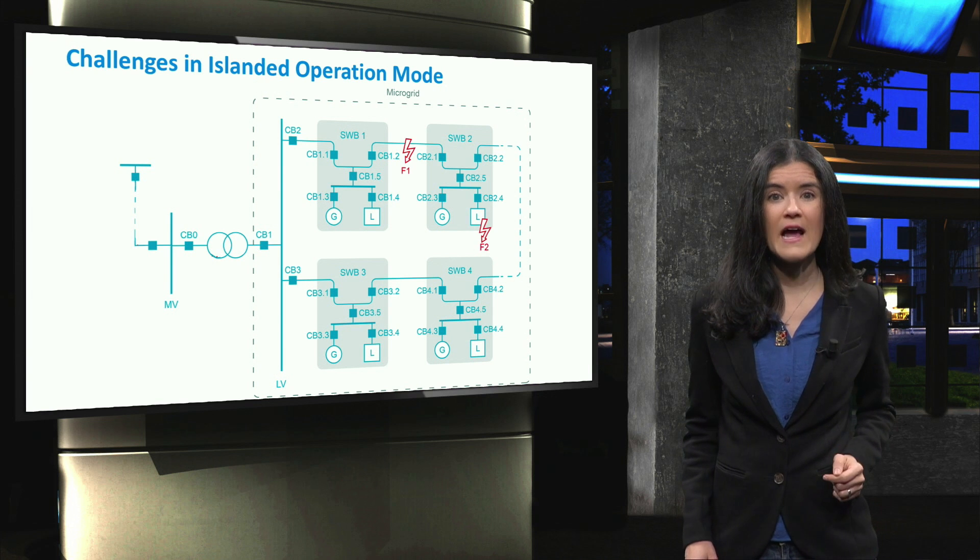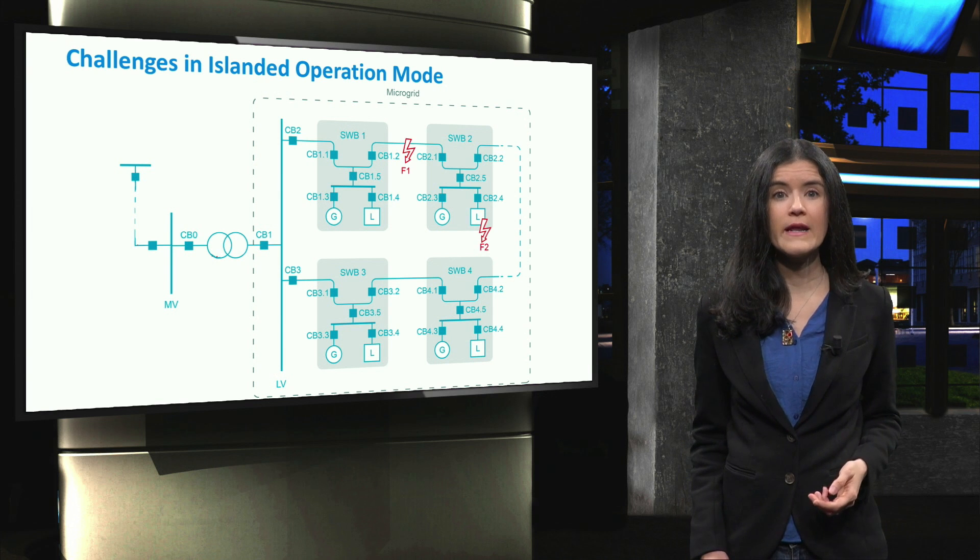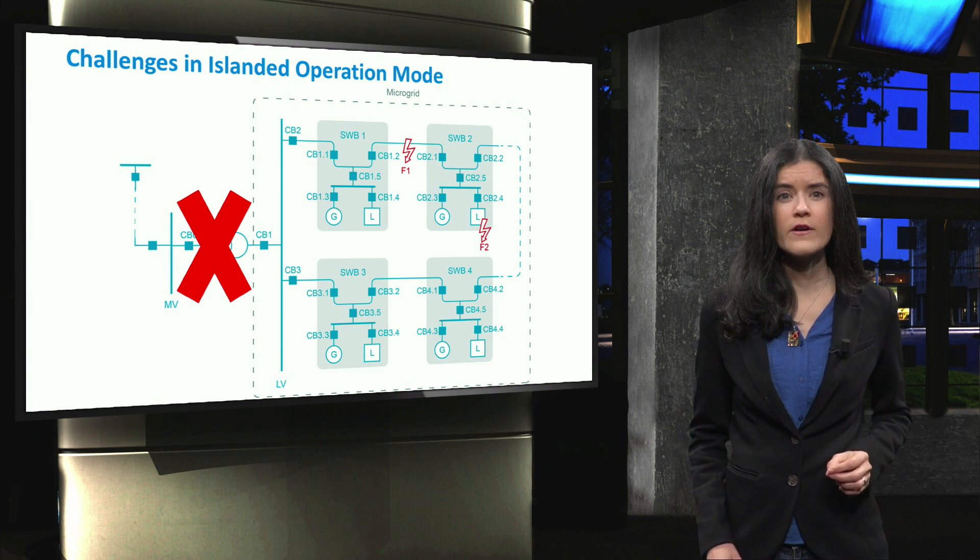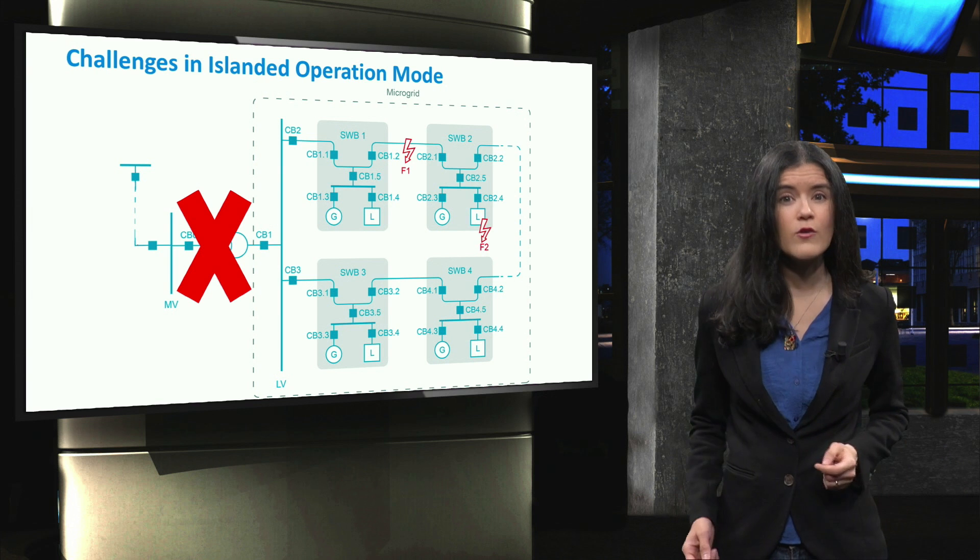This is even more challenging when the microgrid is operating in islanded mode. In this mode, there is no fault current from the main grid, making the overcurrent even lower.